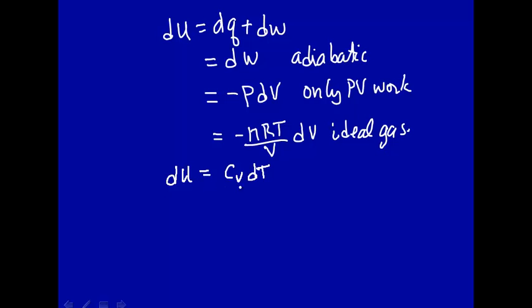So we can also calculate the change in internal energy as cV dT. There'll be a temperature change, and the heat capacity at constant volume times that temperature change will give you the change in internal energy. Alright, so let's equate these two expressions for dU.